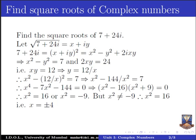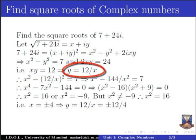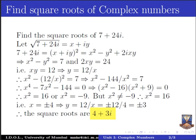Taking square roots on both sides, we get x equal to plus or minus 4. Substituting x equal to plus or minus 4 in y equal to 12 by x, we get y equal to 12 upon plus or minus 4, which gives y equal to plus or minus 3. So when x is equal to 4, y is equal to 3, giving the first square root as 4 plus 3i. And when x is equal to minus 4, y is equal to minus 3, giving the second square root as minus 4 minus 3i.